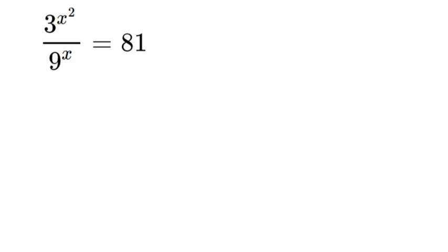Welcome to another video. In this video, we are solving this Olympiad math problem. We have 3 to the power of x squared over 9 to the power of x equals 81.